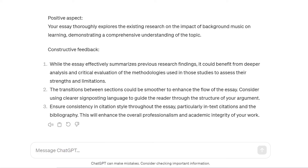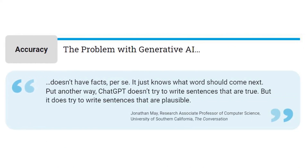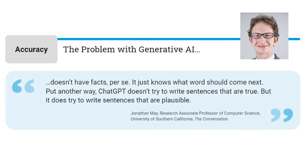However, a quick word of caution: as noted at the bottom, ChatGPT can make mistakes — consider checking important information. While I do agree with the three pieces of feedback in this example, in some cases the feedback might not make sense. You should remember, in the words of Jonathan May, a research associate professor of computer science from the University of Southern California: 'Generative AI doesn't have facts per se, it just knows what word should come next.' Put another way, ChatGPT doesn't try to write sentences that are true, but it does try to write sentences that are plausible. Please be aware of this if you intend to use any of the strategies advised in this video.